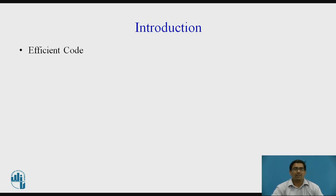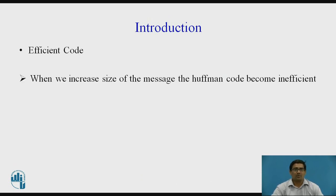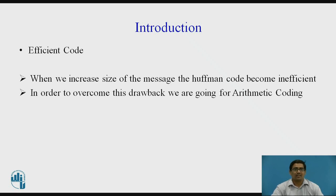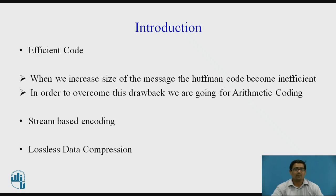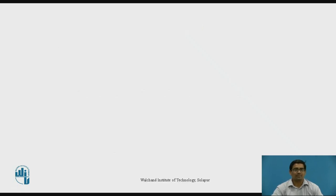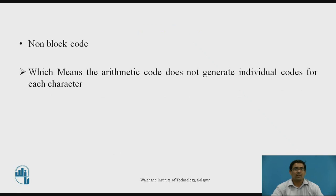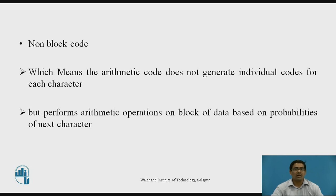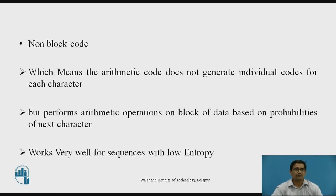Introduction. The Arithmetic Code is an efficient code, because when we increase the size of the message, the Huffman code becomes inefficient. In order to overcome this drawback, we are going for Arithmetic Coding. Arithmetic Coding is a stream-based encoding used in lossless data compression. It is a non-block code, meaning it does not generate individual codes for each character, but performs arithmetic operations on a block of data based on the probabilities of the next character. It works very well for sequences with low entropy.